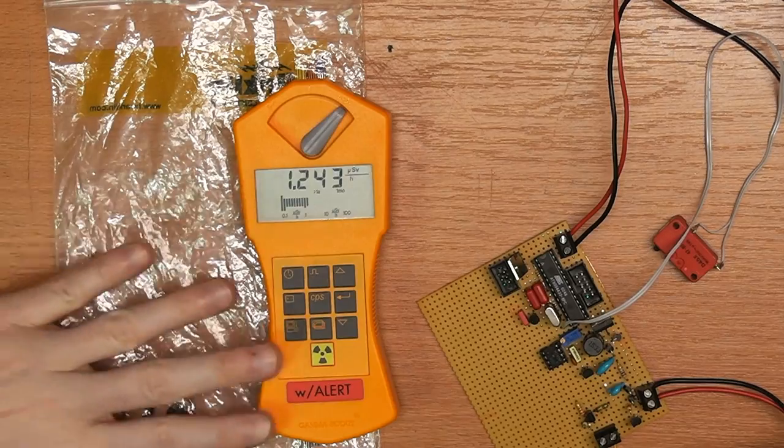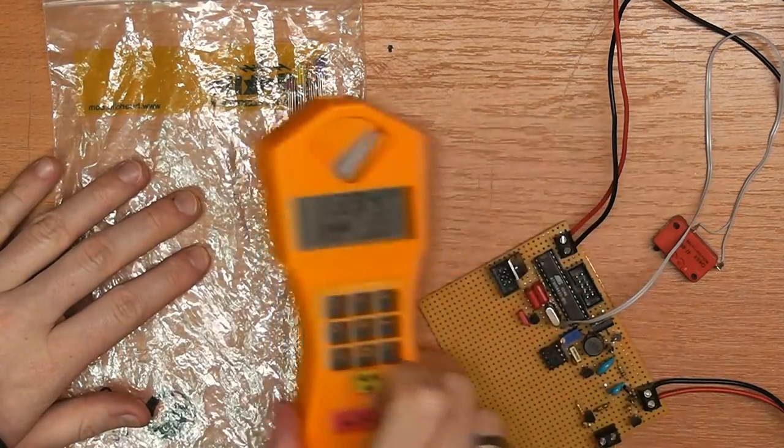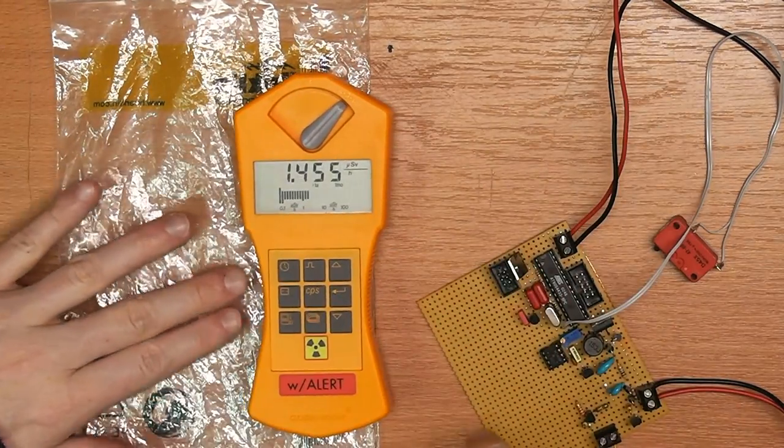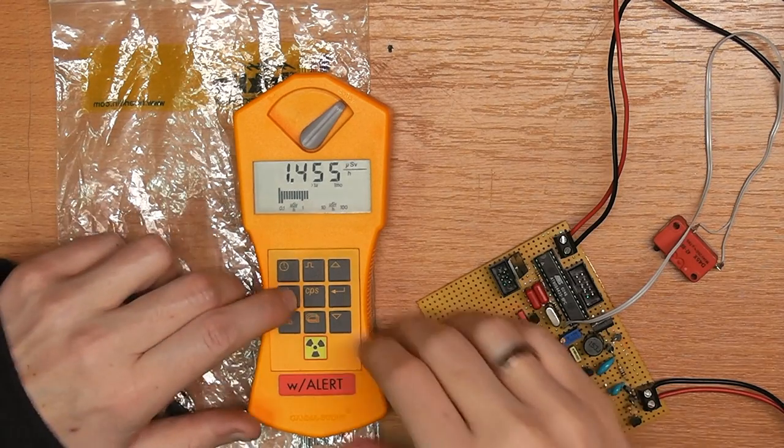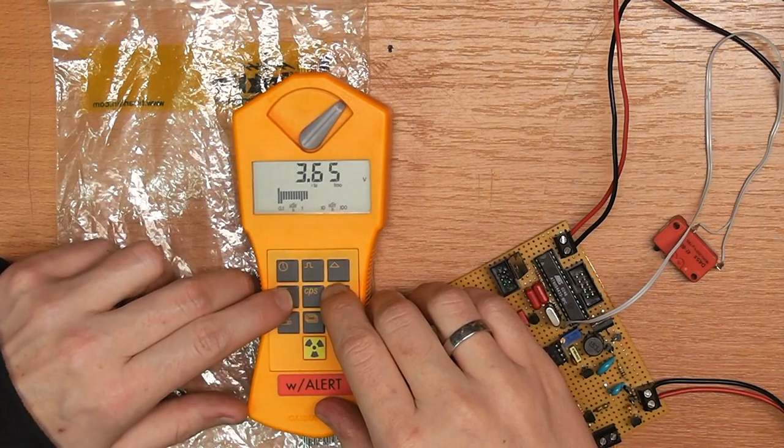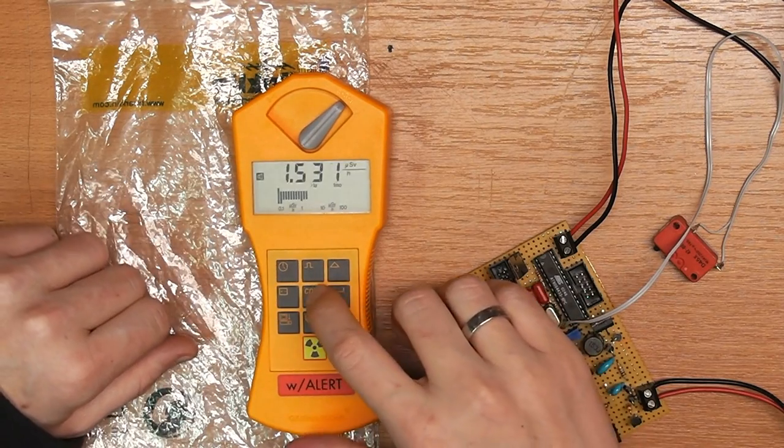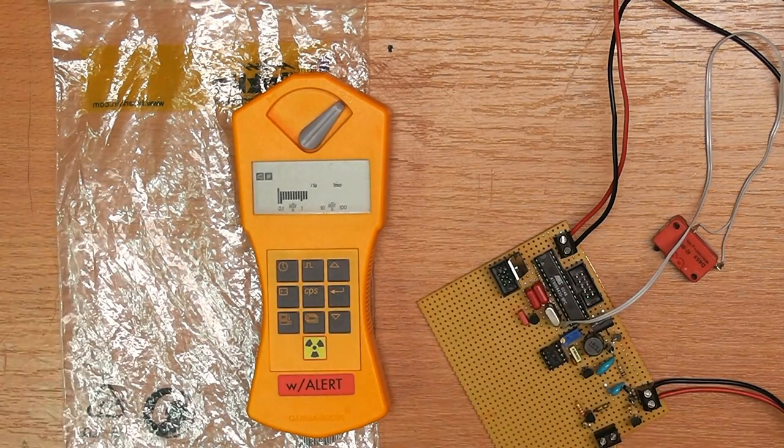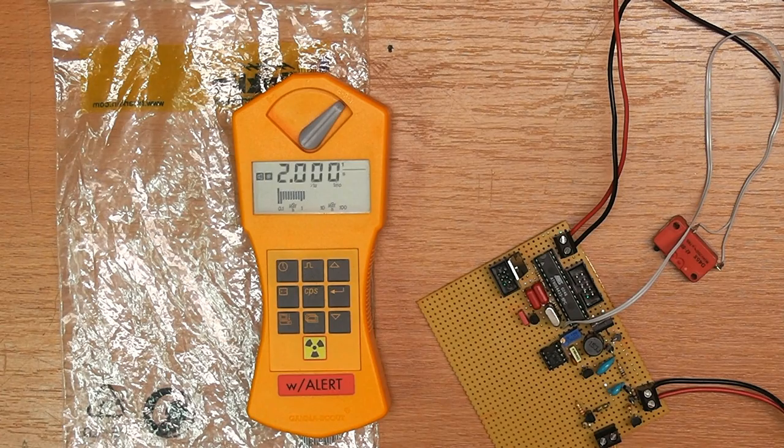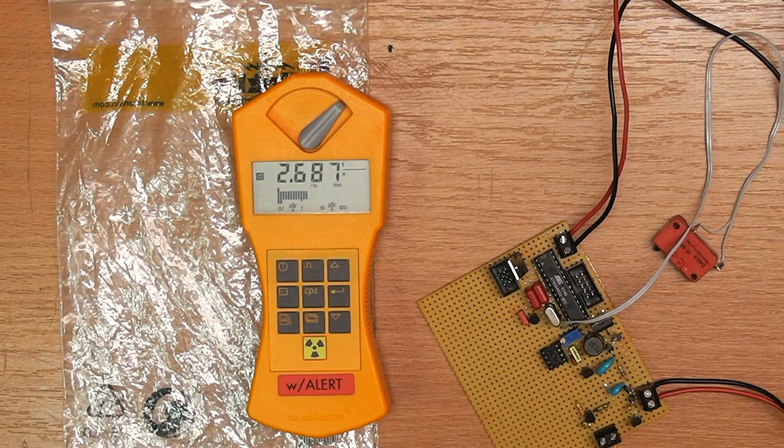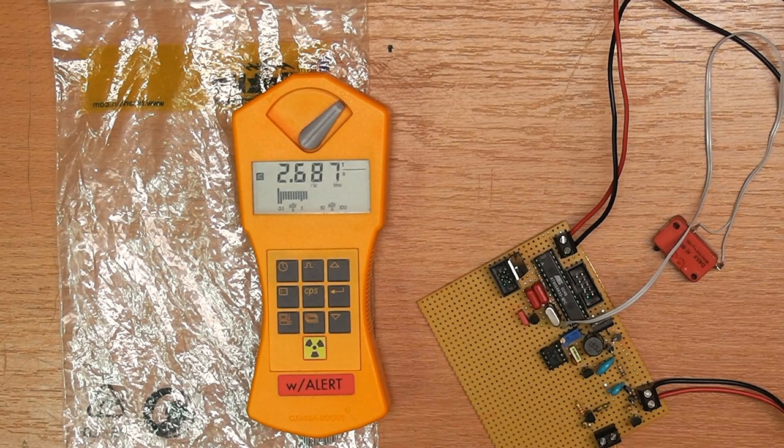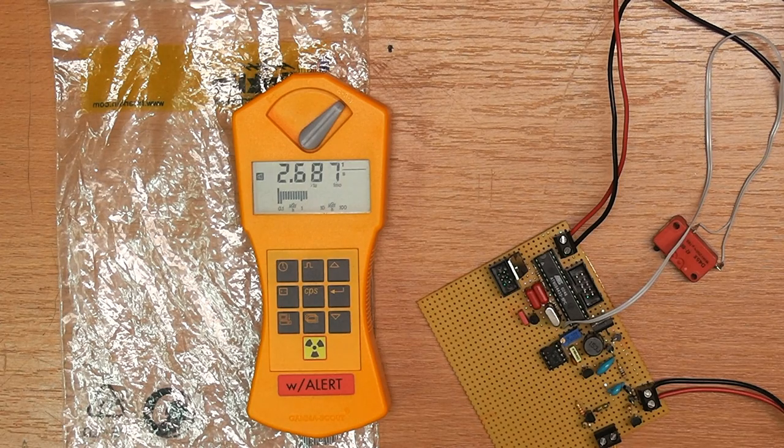So here you can see the Gamma Scout, which lays on top of the welding electrodes. You can see about 1.4 microsieverts per hour. Now let's just turn on the beeper and let's show the counts per second. So you can see it's roughly three to four counts per second. Sometimes a bit lower, sometimes a bit higher.